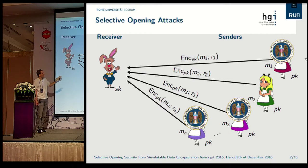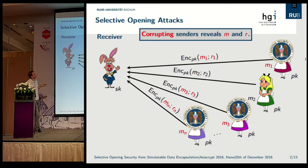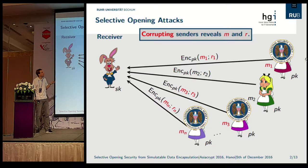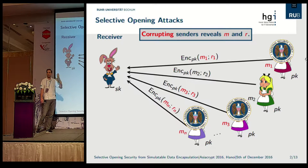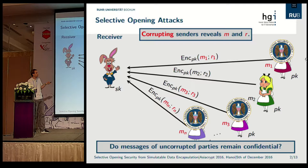We assume that there is an adversary that observes everything sent on the channel, meaning he sees all the ciphertexts. We also assume the adversary is capable of corrupting some of the senders. Corrupting means the adversary learns the message sent by the corrupted senders, plus the randomness used to encrypt, which allows the adversary to recompute and check that the message he learned is actually contained in the ciphertext he already observed.